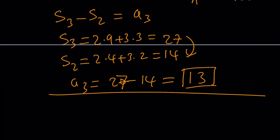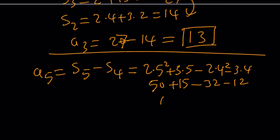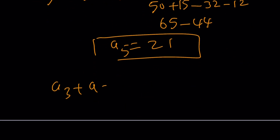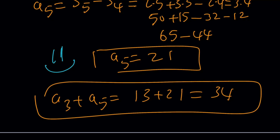Next, a sub 5 equals S sub 5 minus S sub 4. S sub 5 is 2 times 25 plus 3 times 5, which is 50 plus 15 equals 65. S sub 4 is 2 times 16 plus 3 times 4, which is 32 plus 12 equals 44. So a sub 5 equals 65 minus 44, which is 21. Therefore, a sub 3 plus a sub 5 equals 13 plus 21, which is 34 — the same answer as before. Thank you for watching; please comment, like, and subscribe. Take care and bye-bye.